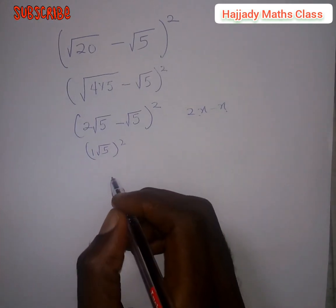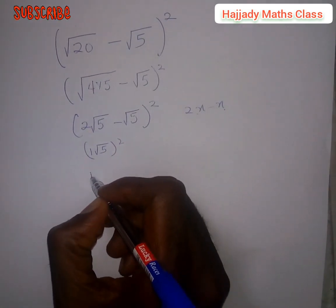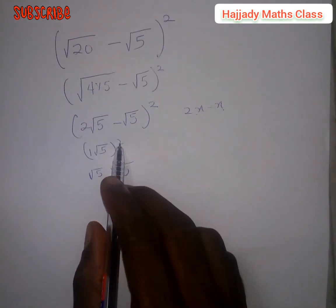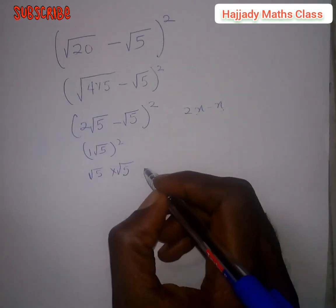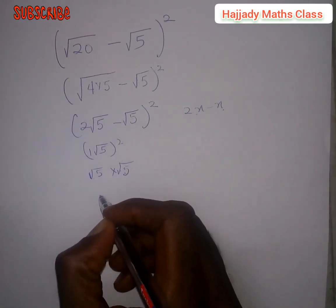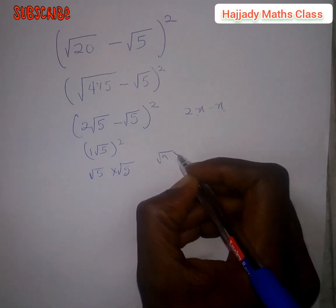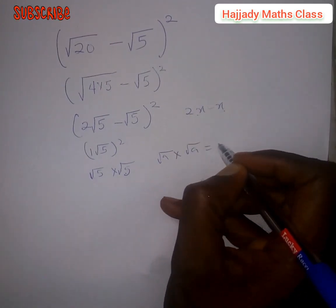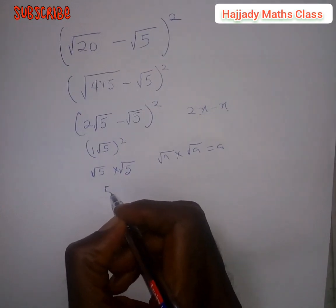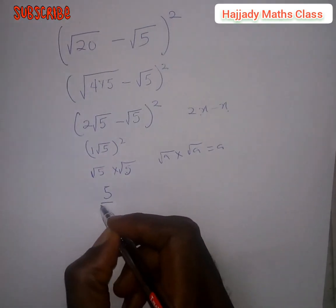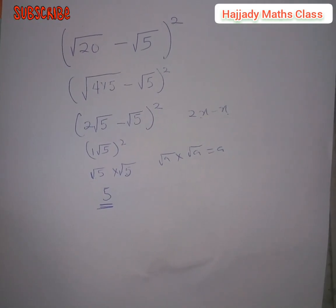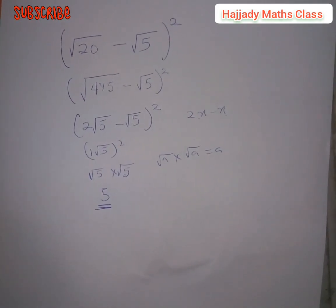We now have (√5) squared, which equals √5 times √5. The rule of surds states that √a times √a equals a. So this gives us 5. That is our final answer. Please kindly subscribe and share our videos. See you in the next video, thank you.